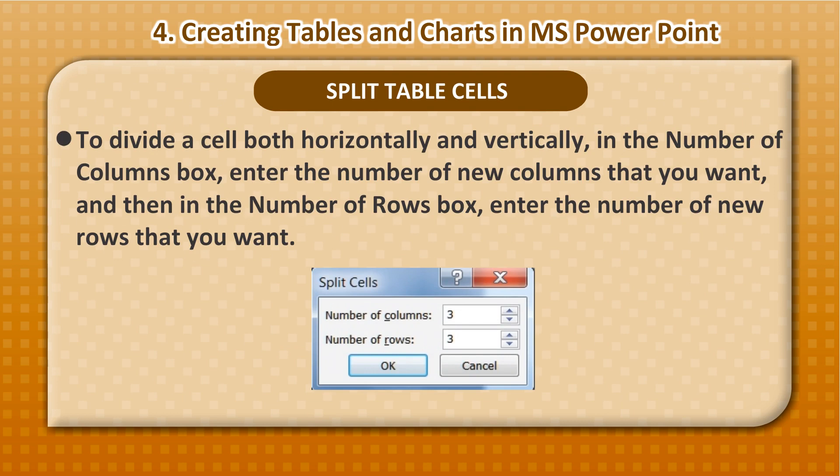To divide a cell both horizontally and vertically, in the Number of Columns box enter the number of new columns that you want, and then in the Number of Rows box, enter the number of new rows that you want.